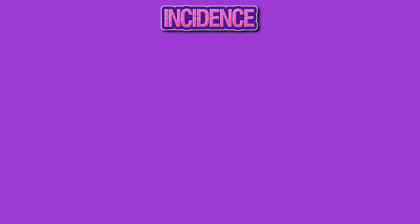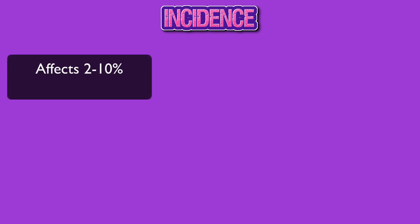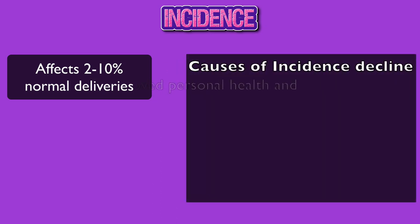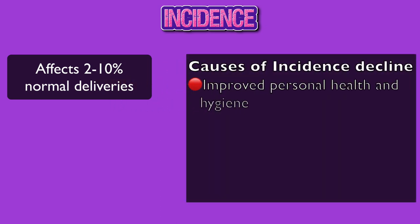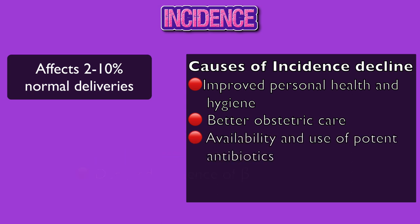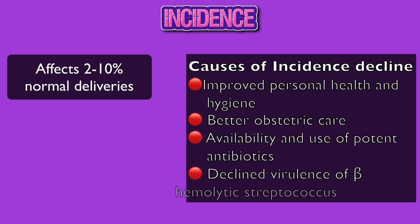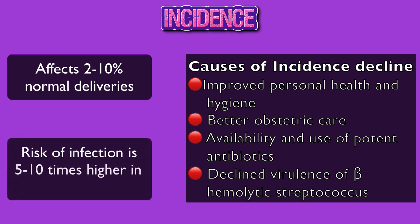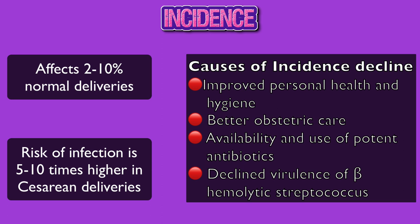In modern obstetrics, there has been a marked decline in the incidence of puerperal sepsis. Currently it affects 2–10% of normal deliveries. In contrast to this, the number of cases of puerperal infection that we see after caesarean deliveries has risen significantly. The risk of infection is 5–10 times higher following caesarean deliveries than normal deliveries.